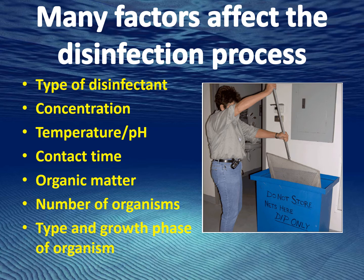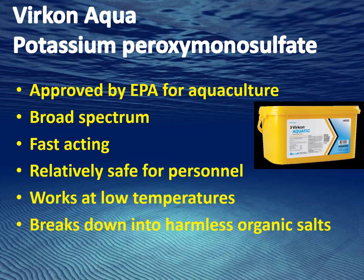Chlorine bleach at 200 parts per million can be used, but use it only as a dip, as it can damage nets. Virkon is a common veterinary disinfectant. It is EPA approved, works on a wide range of pathogens, is relatively safe to use, and breaks down easily. However, it is expensive when compared to bleach.